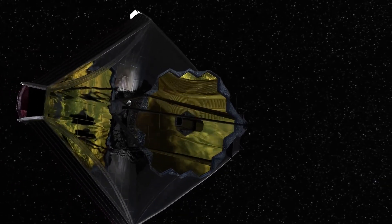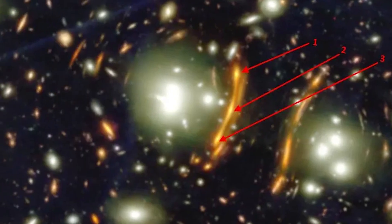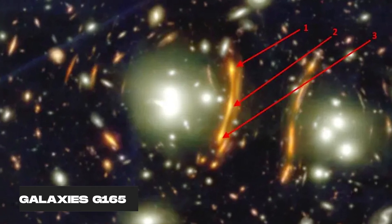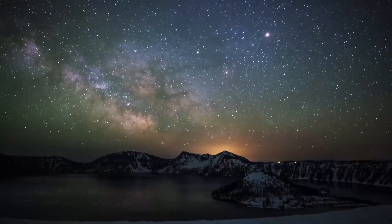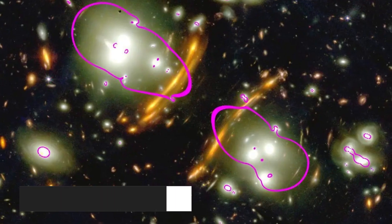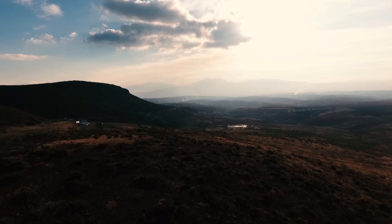So JWST has been busy snapping some awesome pics of the faraway cosmos, and one of them made the astronomers go, wow. It shows a bunch of galaxies hanging out together called G165, which is like 4.5 billion light years away from us. That means we're seeing them as they were 4.5 billion years ago, when Earth was still a baby and life was just getting started.